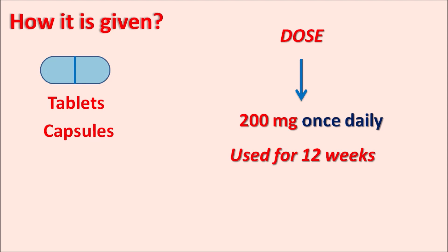Itraconazole is an azole antifungal identified by the suffix 'conazole', and this drug has triazole ring systems instead of imidazole ring systems. Because of the triazole ring, water solubility is increased, improving bioavailability. This drug should be carefully given in patients at risk for cardiovascular disorders, since it reduces force of contraction and can increase the risk of congestive heart failure. It can also produce hepatotoxicity, so liver function should be monitored. Upper respiratory tract infections, headache, and dizziness are important side effects.